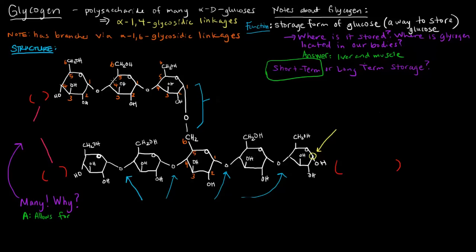What's its structure like? We already said that it's connected in a chain by alpha-1,4 glycosidic linkages, and that's actually what I've drawn here. These are alpha-1,4 glycosidic linkages, where the one carbon is connected to the fourth carbon in a chain by alpha-linkages. Here's a 1,4 linkage, here's a 1,4 linkage.